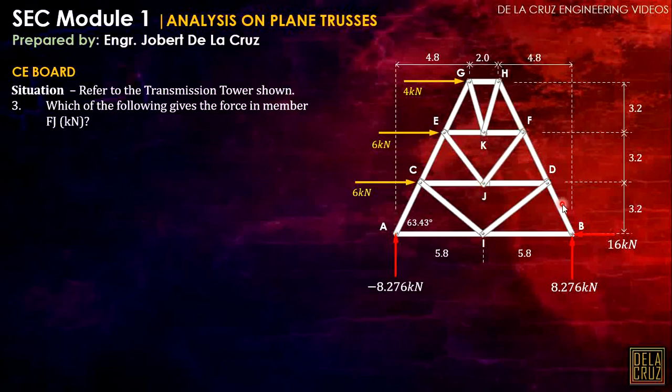Before that, it is best to calculate the lengths muna. Length ng member CJ, EF, FK, and DJ. Magagamit natin yan mamaya. By using the calculator, take note this is a line. We can create an equation of the line. So we can use the mode 3, 2, linear mode from the word line.